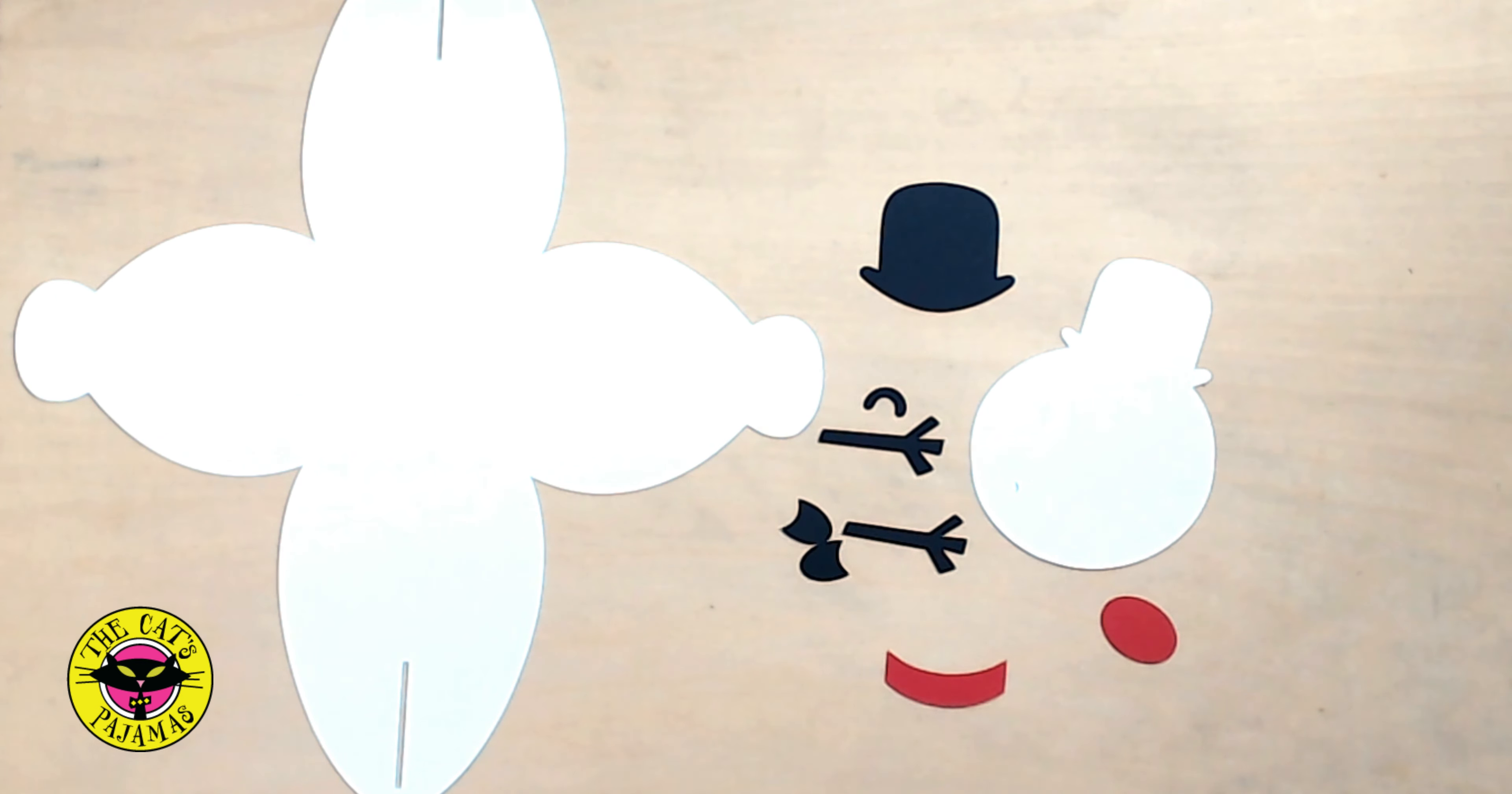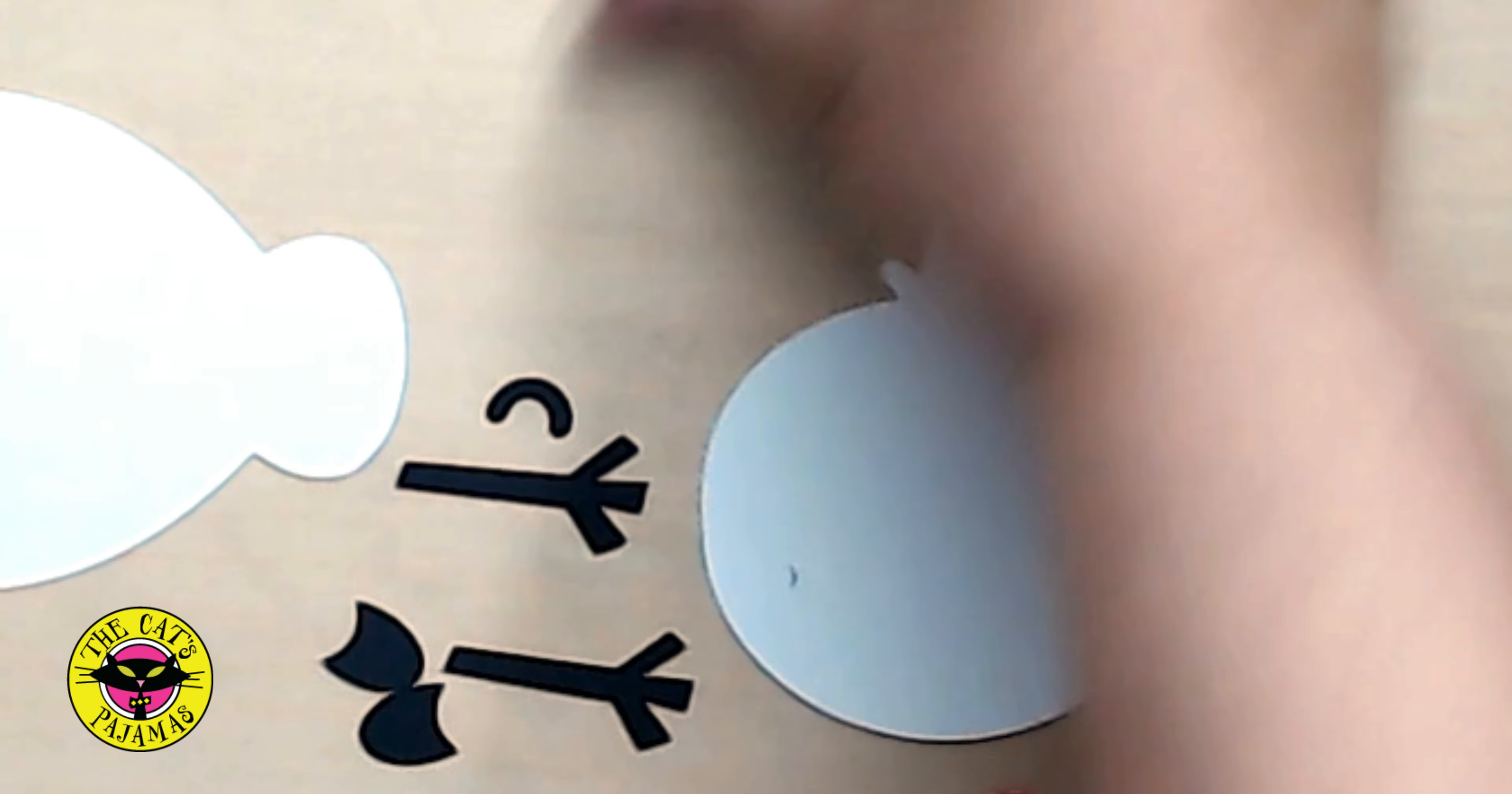So let's start with the snowman. The small snowman has the box, the snowman base, and has the nose, two eyes, two arms, a mouth, and two pieces for the hat.